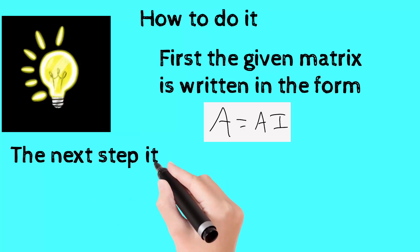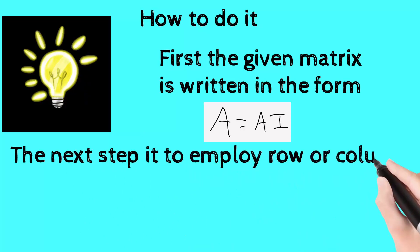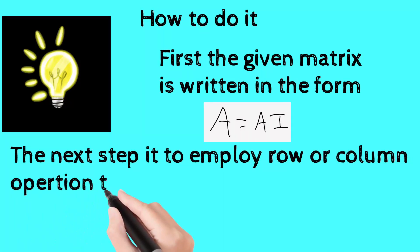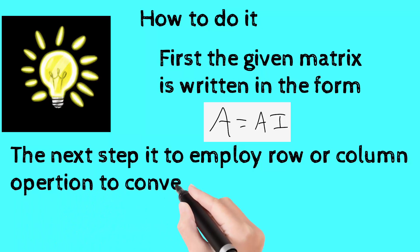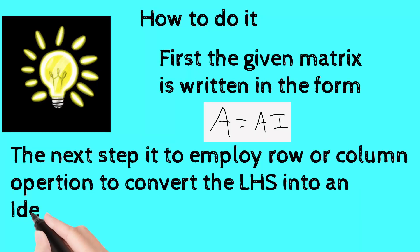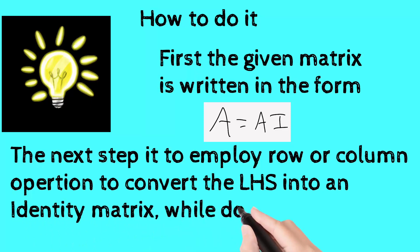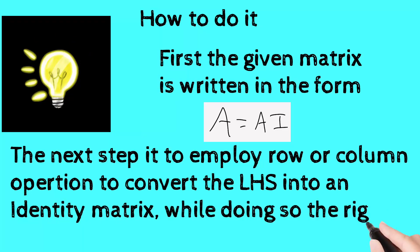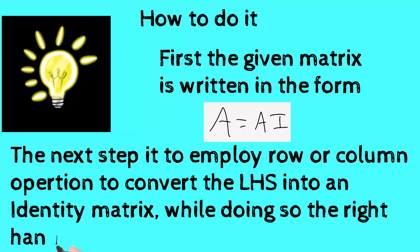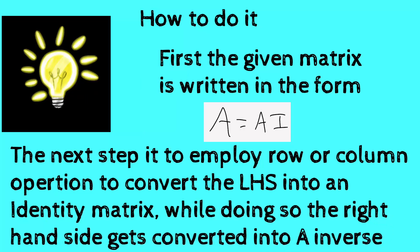The next step is to convert the left-hand side — that is, A — into an identity matrix using either row or column operations. This in turn changes the right-hand side identity matrix I into a new matrix, which will serve as the inverse of the given matrix.